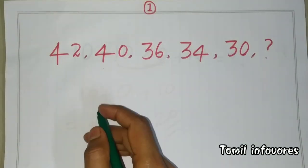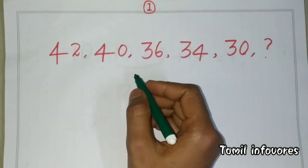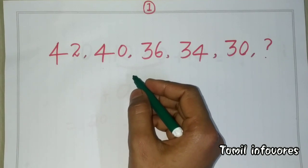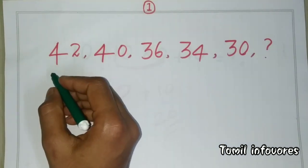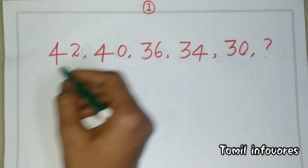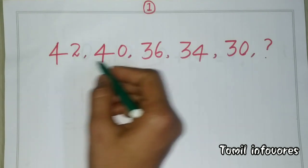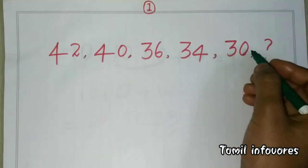Hello viewers, welcome to Tamil Infoverse. Let's see what we can find on the next page. The first page has the sequence: 42, 40, 36, 34, 30.